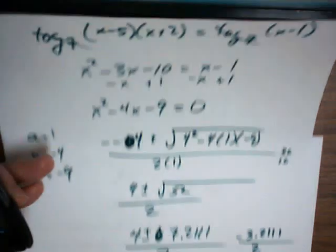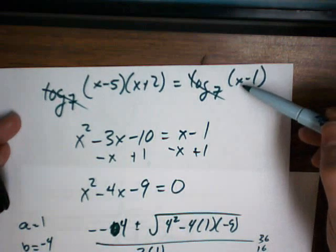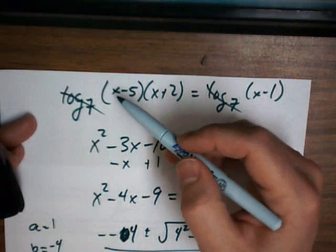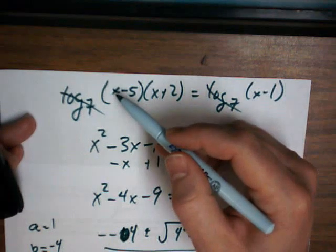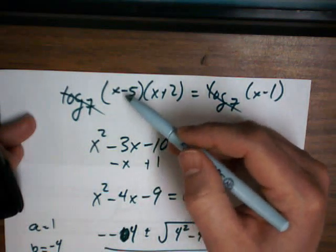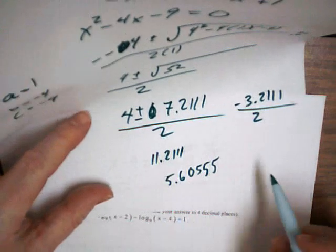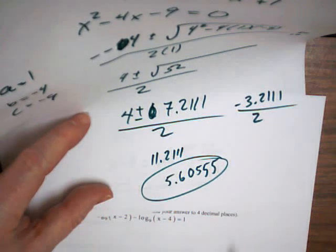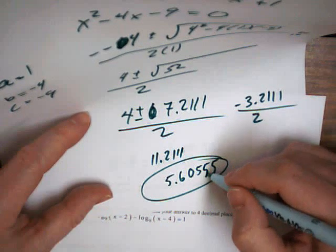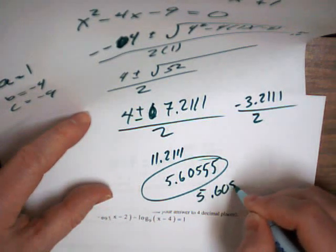And let's see if that would work. I can subtract 1 away from 5. I can actually take 5.6 minus 5 and still get a positive answer here. So this is okay. This answer is good. We can use this answer here. Let's make sure we round to 4 decimal places. So I'm going to round it to 5.6055.